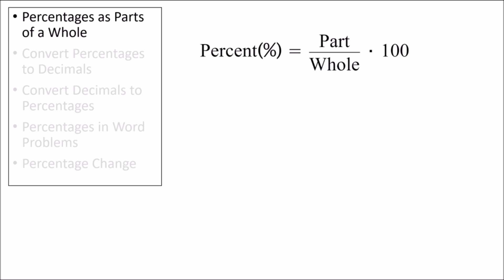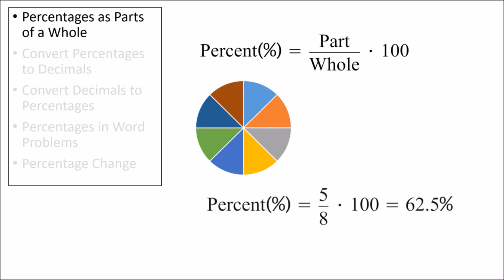Suppose we have a circle divided into eight equal parts. What percentage of the whole would five of these parts be? To calculate this, we use the value 5 for the part, the value 8 for the whole, and then plug these numbers into our percent equation. Doing so, we can see that five parts from a whole, consisting of eight equally sized parts, is 62.5% of the whole.